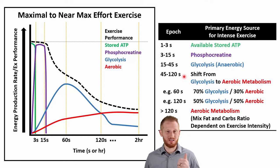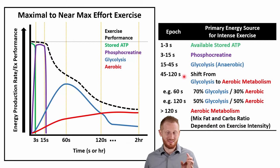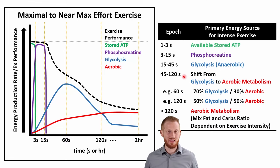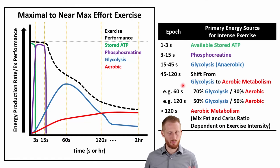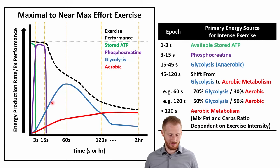As we switch from phosphocreatine to glycolysis, exercise intensity has to come down because we can't produce energy as quickly with glycolysis as with phosphocreatine. After 45 seconds, there's a steady shift from anaerobic glycolysis to aerobic glycolysis — we start ramping up the Krebs cycle and electron transport chain, using the pyruvate that is the end product of glycolysis when aerobic metabolism is active.